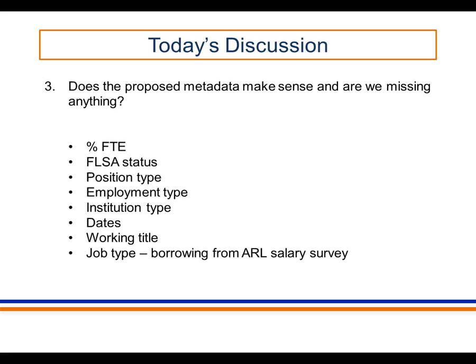If we move to the next slide, we're going to look over again at those metadata categories Brian went over and ask whether there are things missing from this list that would be useful. Position type would include professional librarian, other professionals, and support staff. Employment type might be tenure accruing or permanent status eligible, temporary, or residents and interns — as suggested in the last webinar. Just wondering if you had comments on these categories. The purpose for this data is allowing us, outside the institution, to access all this data in a way where we can narrow it down and find documents we might be interested in.